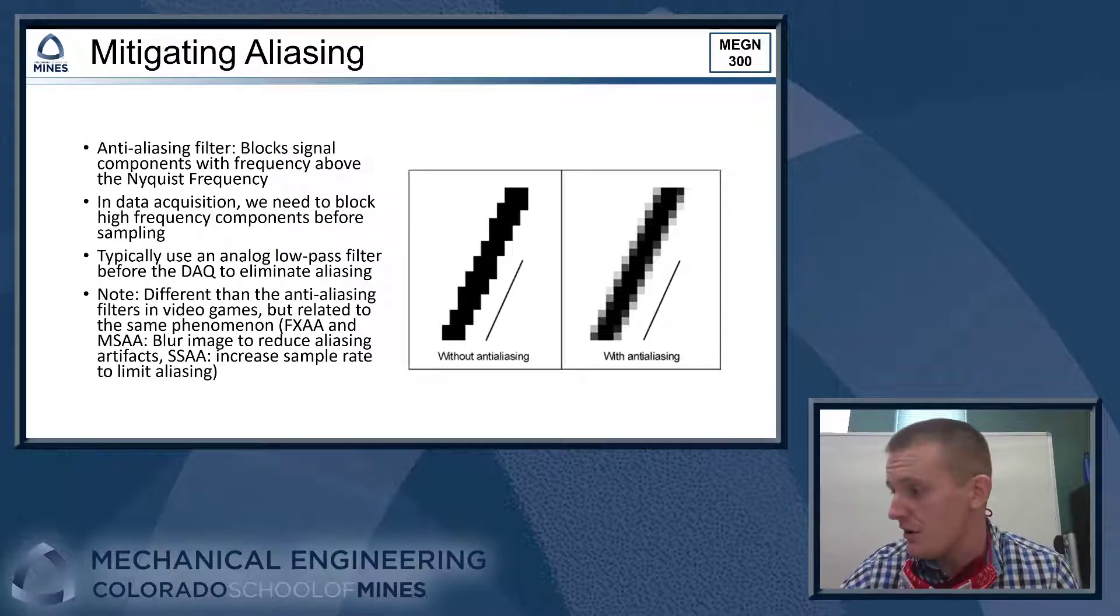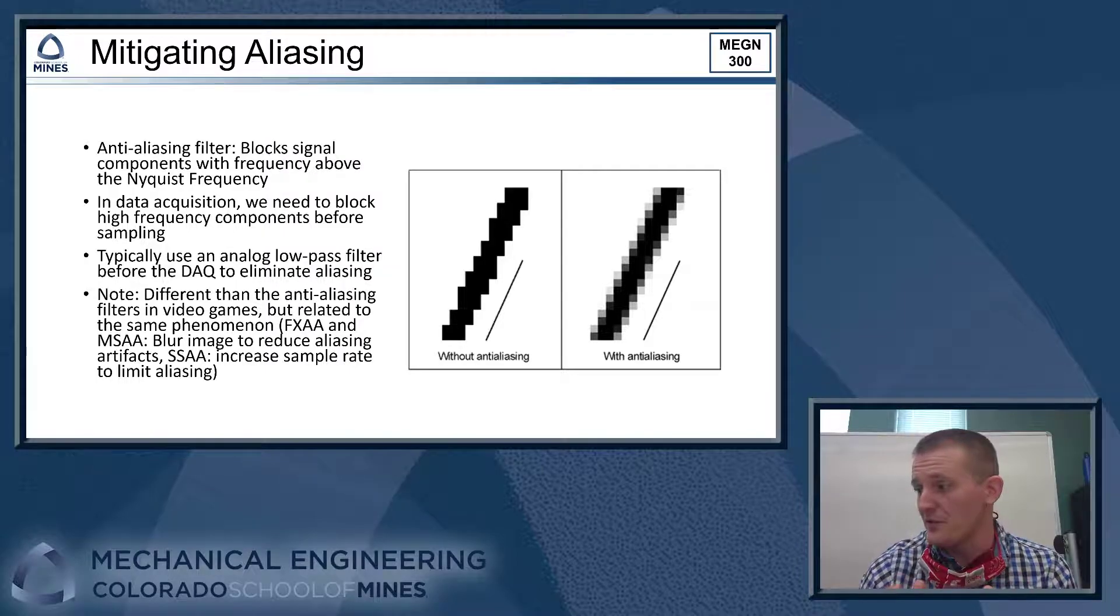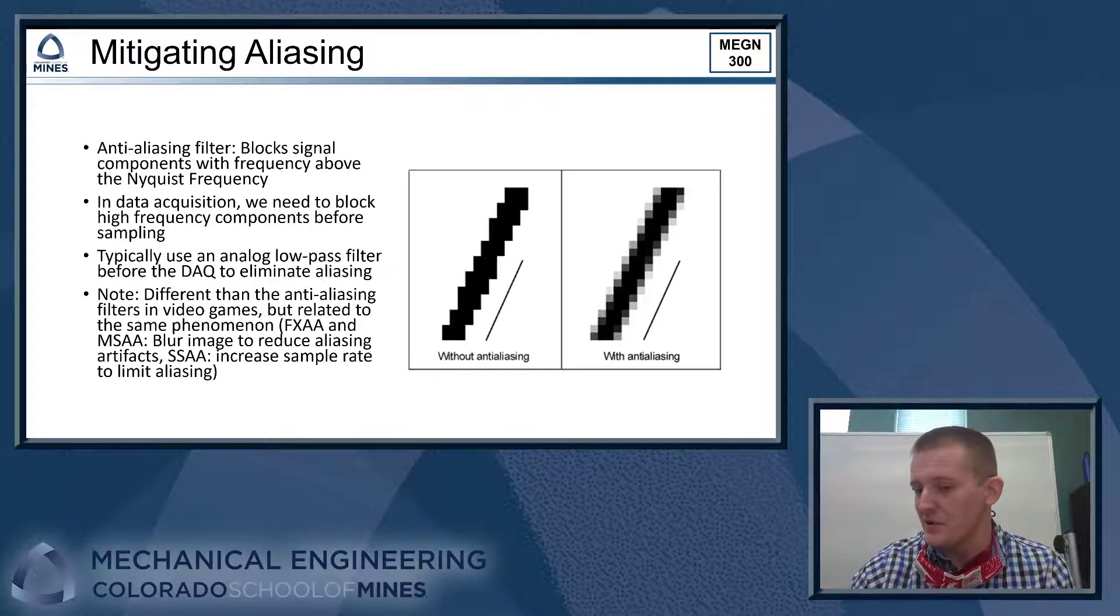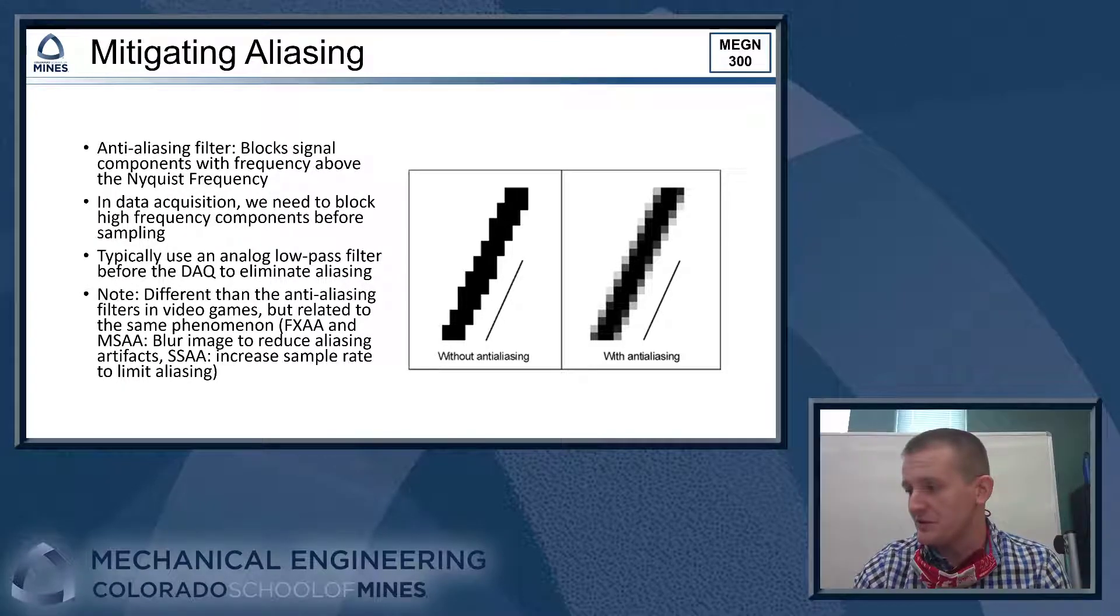So what we're going to do is block signal components that are above the Nyquist frequency. So for our applications where we're mostly looking at electrical signals, we need to block those high frequency signal components before they get sampled, because once we sample the high frequency components, that's when aliasing happens. Remember that aliasing is a result of not sampling a signal quickly enough. So if we get rid of all the high frequency components before we sample the data, we can be confident that there's no aliases in our collected data after the fact.